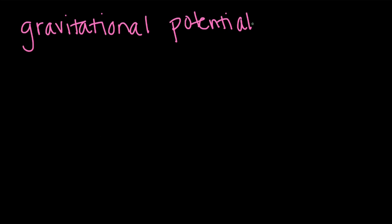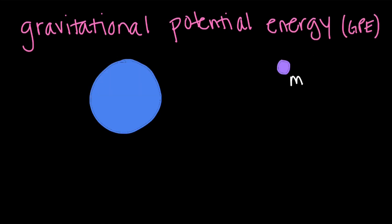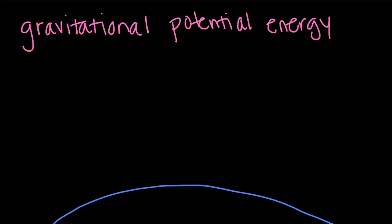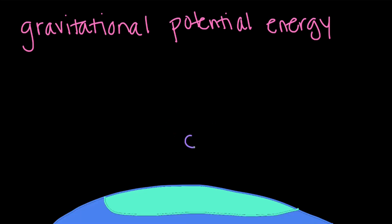Gravitational potential energy is the potential energy that an object with mass has due to the force of gravity from another object with mass, like, say, the Earth. And in fact, we often use the surface of the Earth to compare an object's position with to see how much potential energy it has in the Earth's gravitational field.